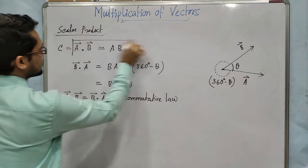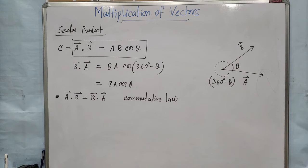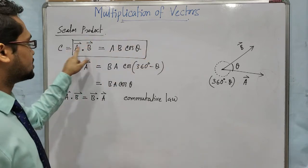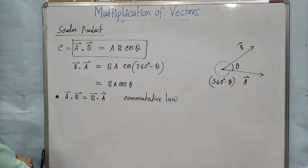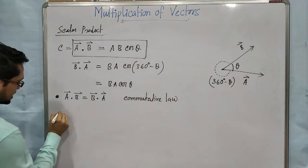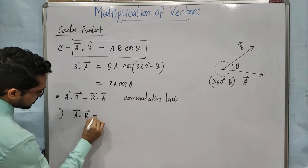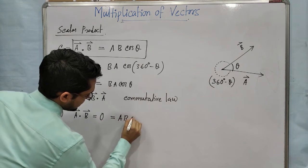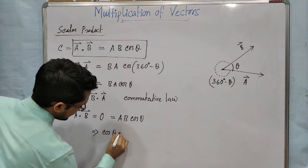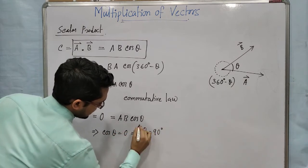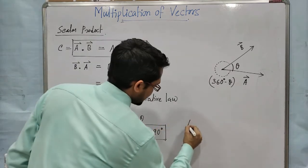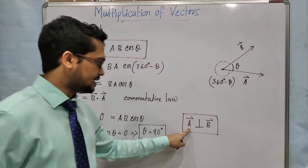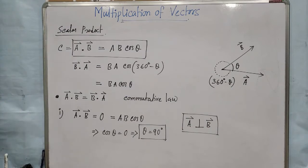We use a dot b = ab cos θ for problems like finding the angle between a and b. Also, if after scalar product you get A dot B = 0, that means cos θ = 0, so θ = 90°. So A dot B = 0 means A vector is perpendicular to B vector. Without finding anything else, we can write A vector is perpendicular to B vector.